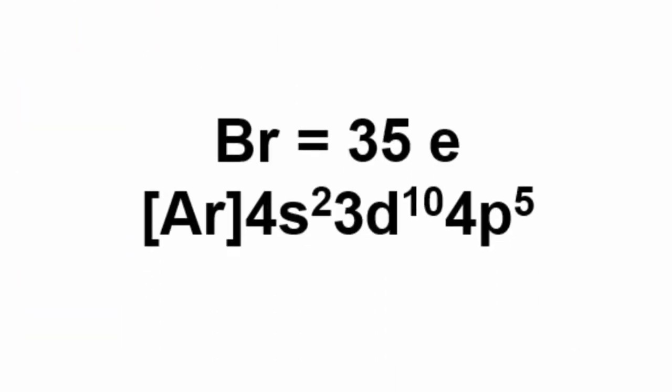This makes the shorthand electron configuration for bromine argon in square brackets, 4s2, 3d10, 4p5.